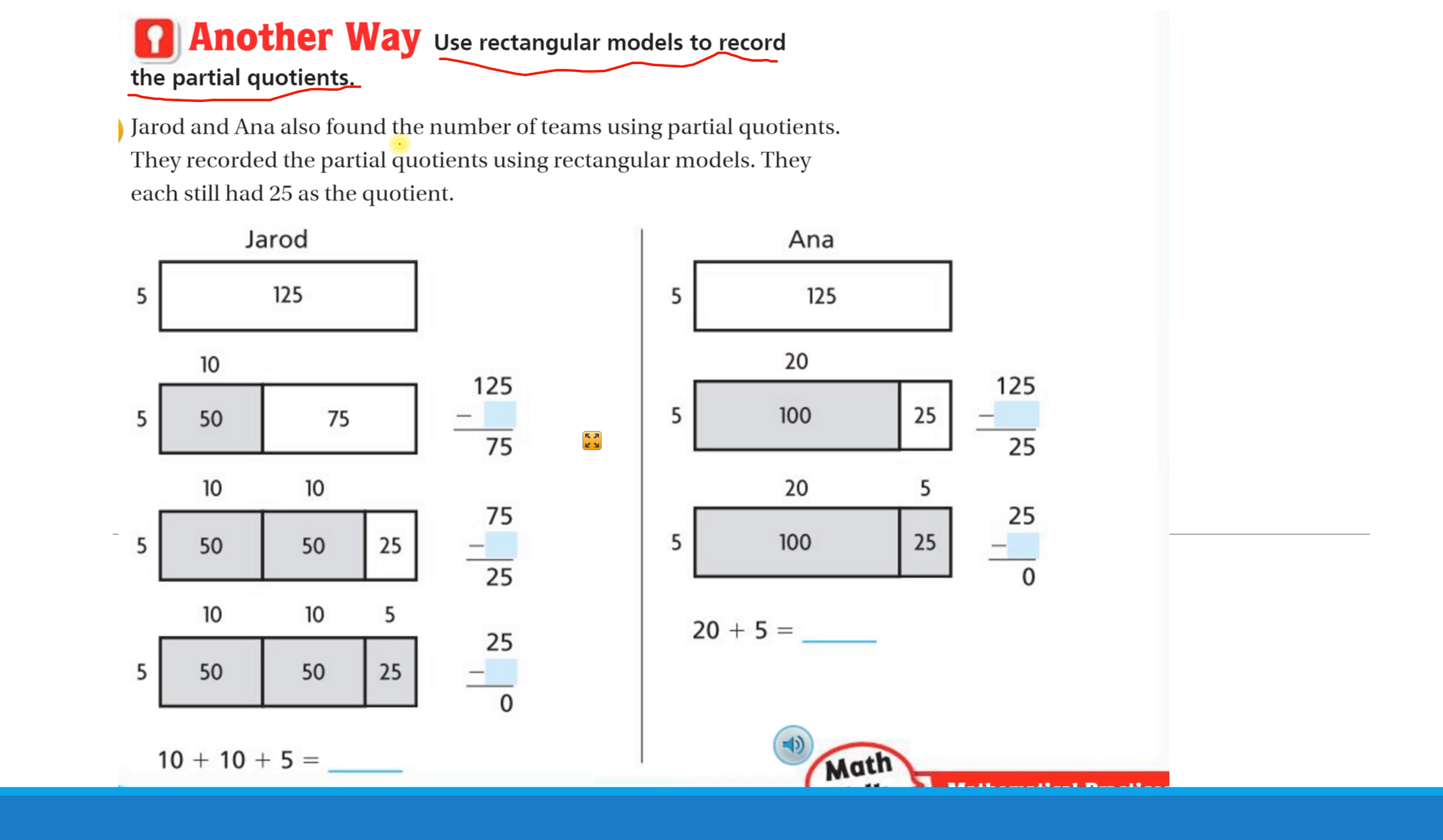Jared and Anna also found the number of teams using partial quotients. They recorded the partial quotients using rectangular models. They each still had 25 as the quotient.